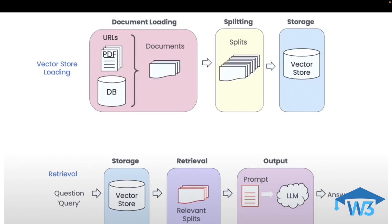Now let's come to the retrieval part. When you ask a query, first it performs a similarity search on the vector store, fetching out the relevant information. That relevant information is then converted into a prompt, which is passed into the LLM — the large language model — and you get a contextual answer to your queries. So to summarize: we load the documents, divide them into chunks, add them to the vector store, perform a similarity search, generate a prompt from the relevant information, and the LLM responds in context to the documents.